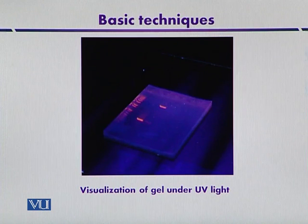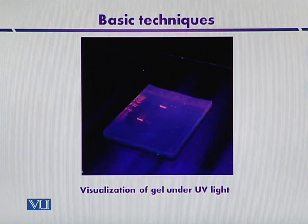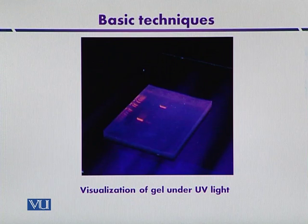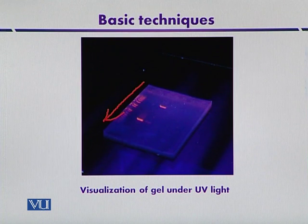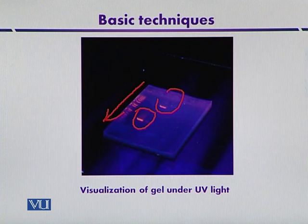Here is the visualization of DNA bands under ultraviolet light. When the gel is stained with ethidium bromide and exposed to UV light, the bands of DNA become visible as an orange color. There is a column of a ladder — that is, a marker — which is run in parallel with the DNA samples. These are the DNA samples visible as orange-colored bands after exposure to UV light.